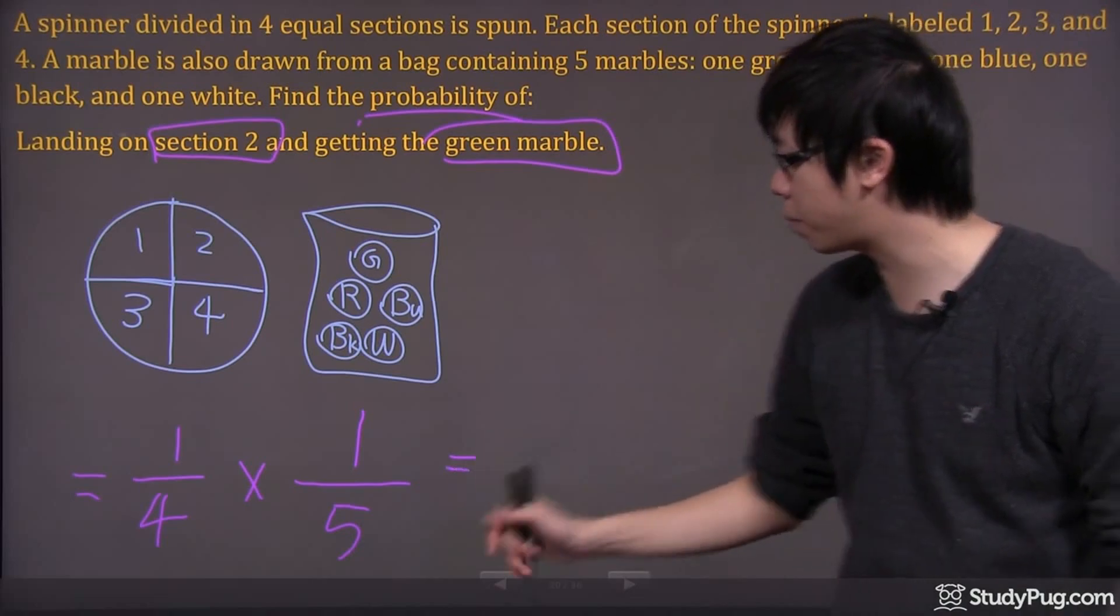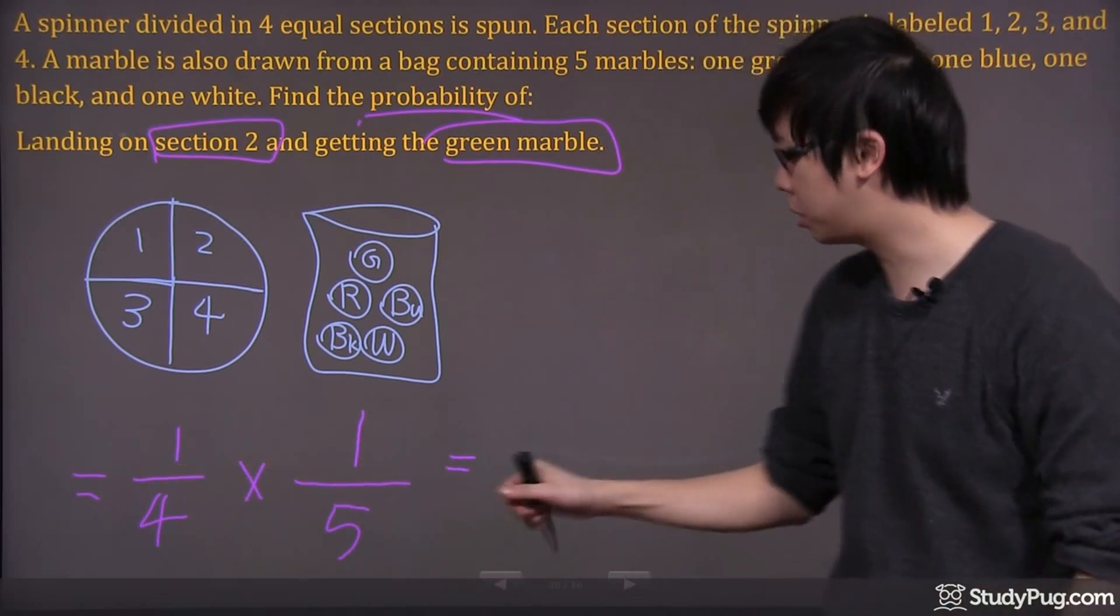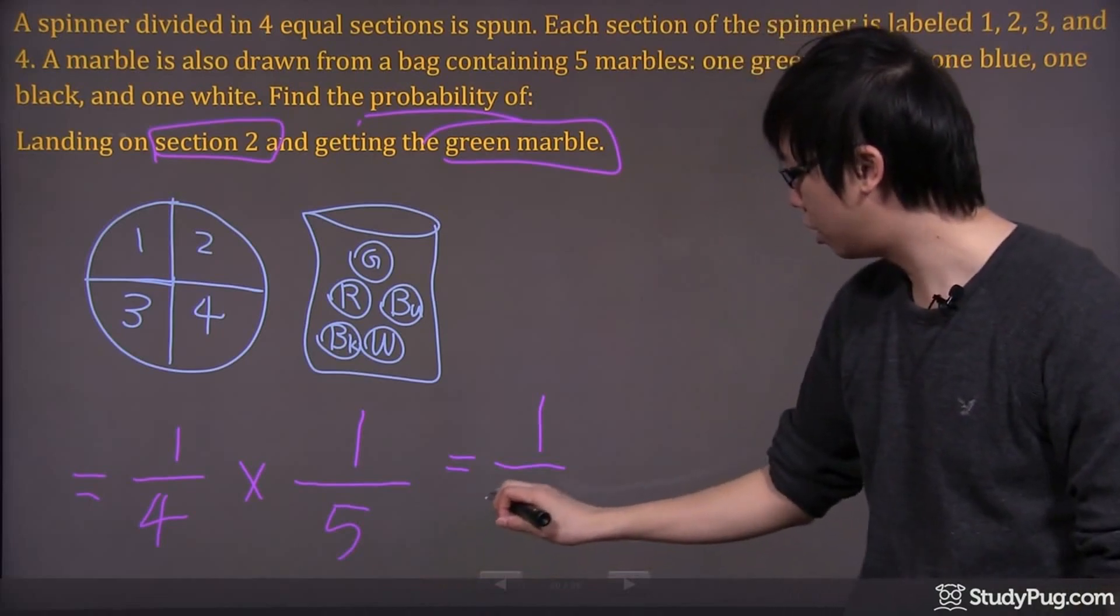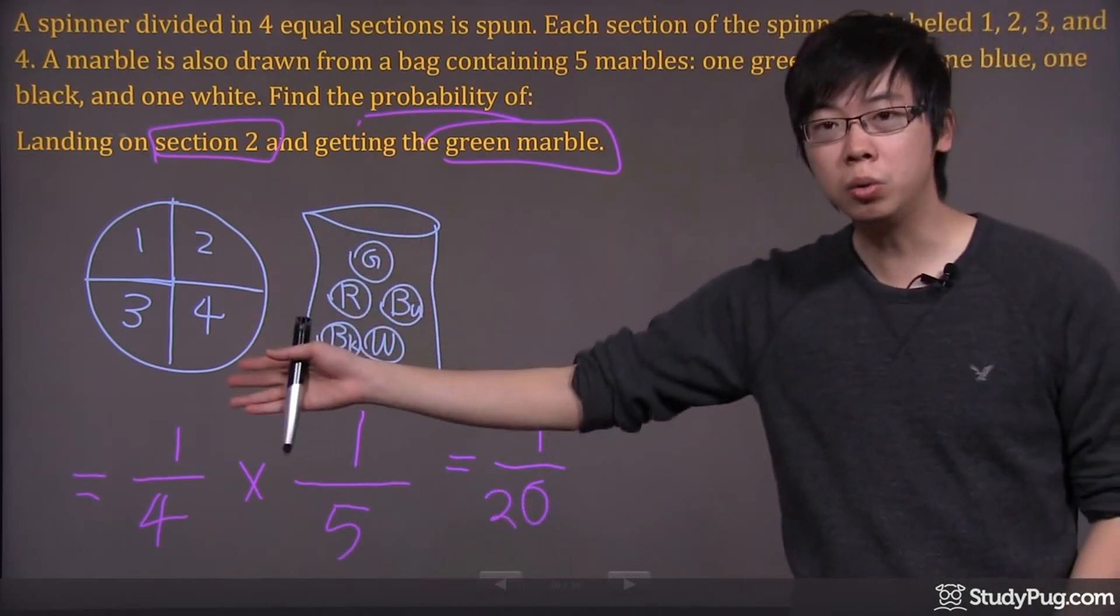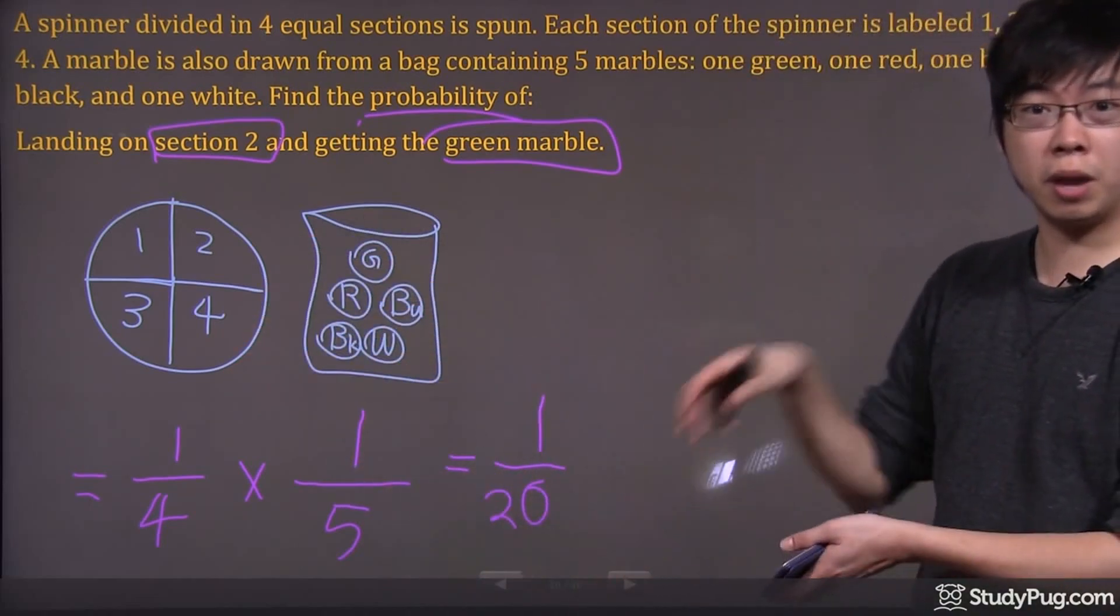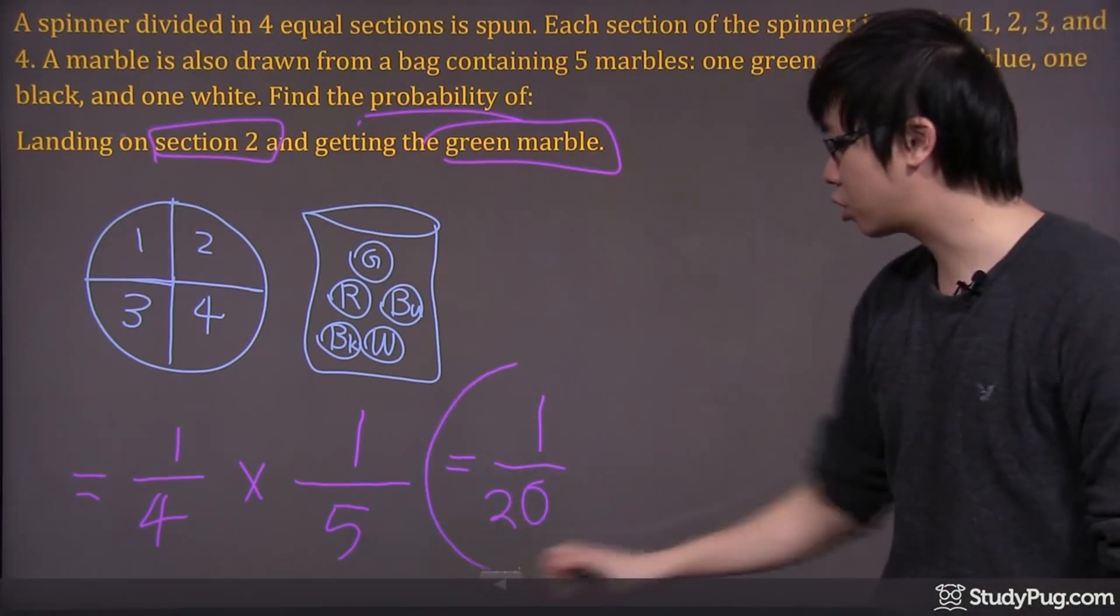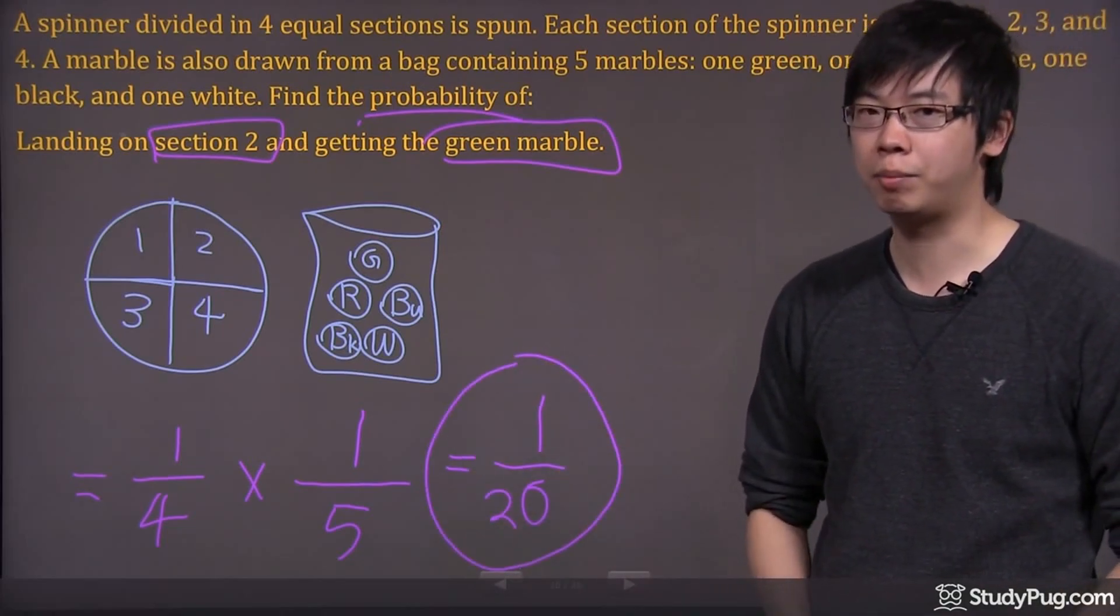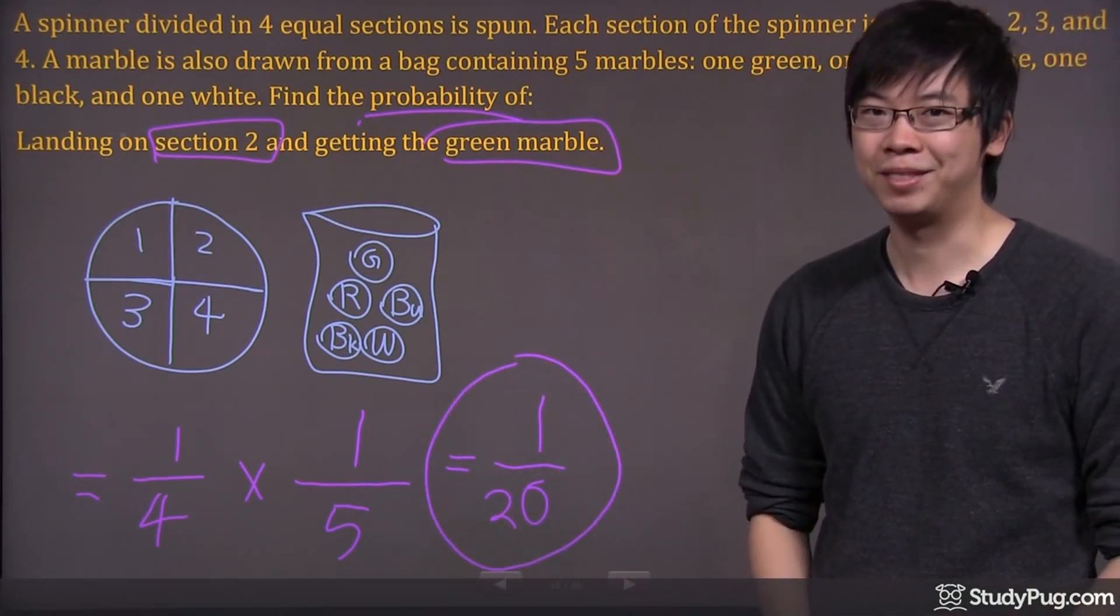At the very end, you're multiplying. One times one gives you one, divided by four times five gives you twenty. So the chance for you to spin the two and then grab a green from the bag without looking is one out of twenty. Not good odds, but still better than 6-49. Thanks for watching.